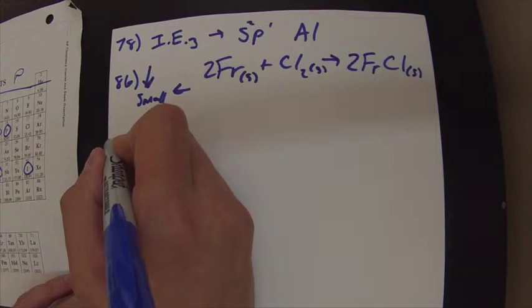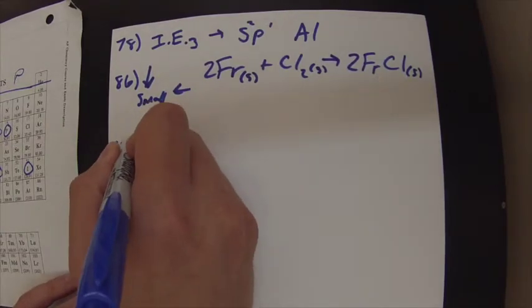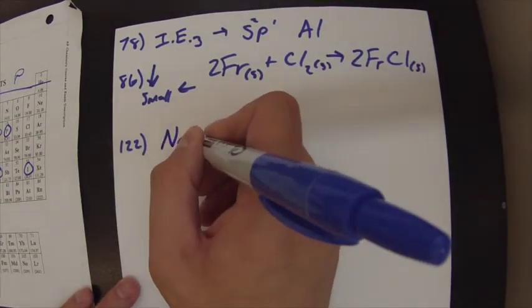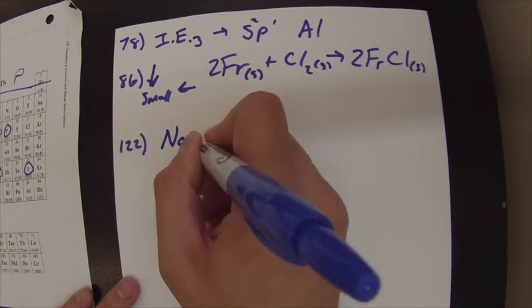Alright, next is 122. So, it says calculate the delta E for the reaction of this.